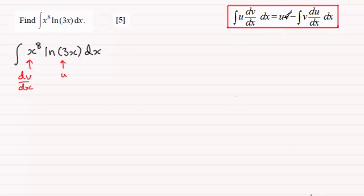So working from the formula then, we've got u times v. So u is the natural log of 3x, and put that in brackets. It just means that you don't write any ambiguous terms down. And then we've got to multiply it by v. v is the integral of dv dx. So we've got to integrate x to the power 8 with respect to x. So that's going to be x to the power 9 over 9. And put that 2 in brackets.